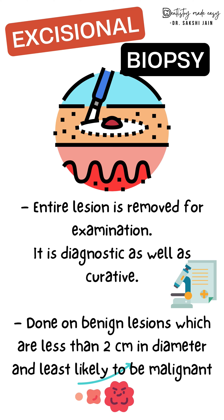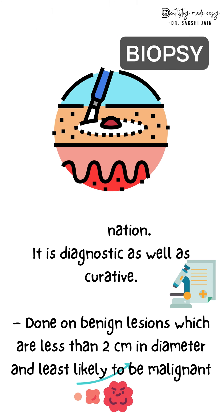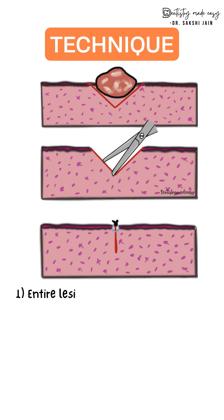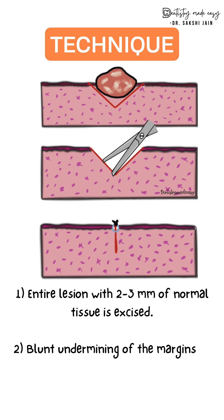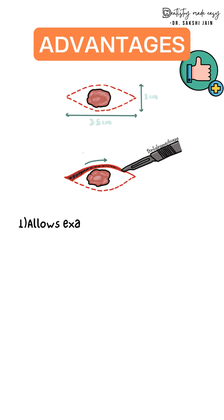Moving on to the technique: first, you remove the entire lesion with two to three millimeters of normal tissue for comparison. Next, you perform undermining of the margins of the mucosa, and lastly you place the sutures.